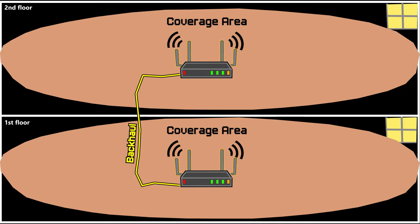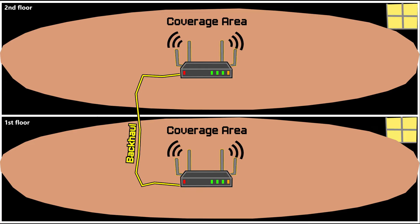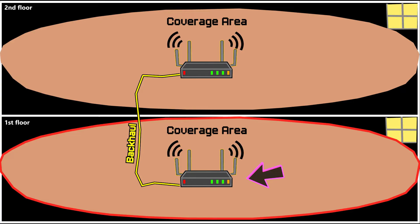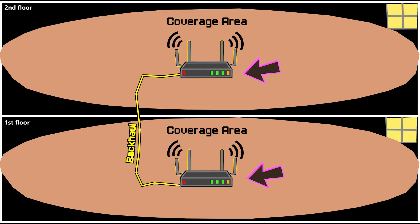The first scenario involves using two different access points with a wired backhaul. In my opinion this is the best case scenario, as it allows me to address each floor separately and follow the recommendations discussed in the first video. These recommendations include installing the access point in the center of each floor, elevated from the ground, and keeping the antennas in a vertical position. There is no need to worry about whether one access point's Wi-Fi can reach the second floor or vice versa, because each access point is responsible for covering its own floor. The wired backhaul ensures a stable and reliable connection between the nodes, eliminating any concerns about wireless coverage between the floors.